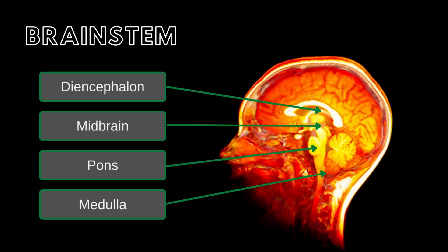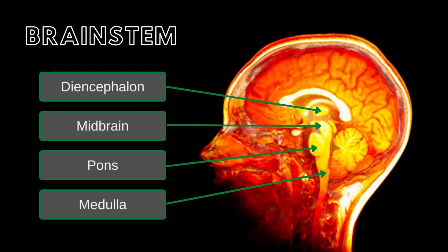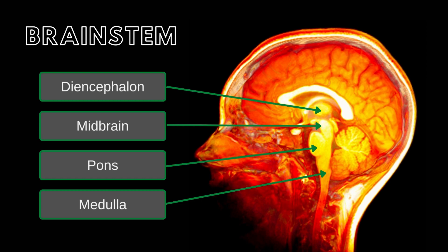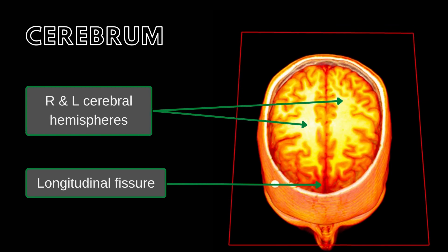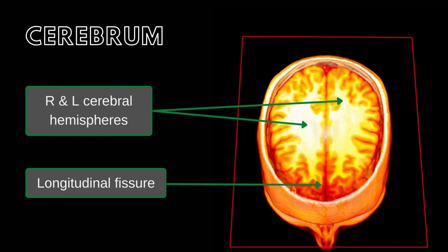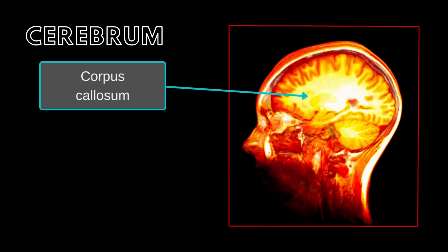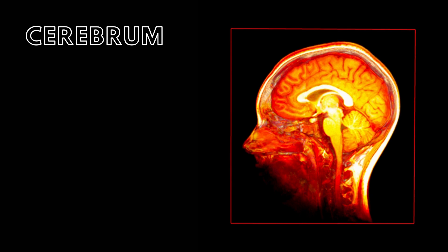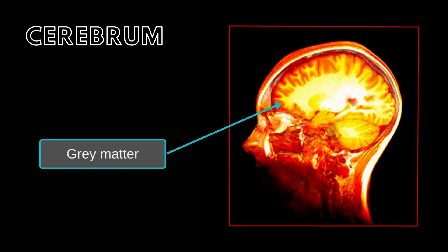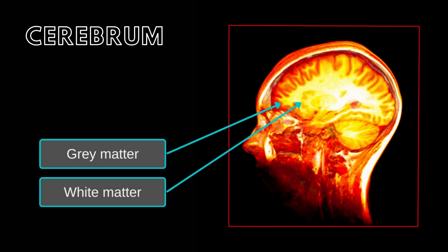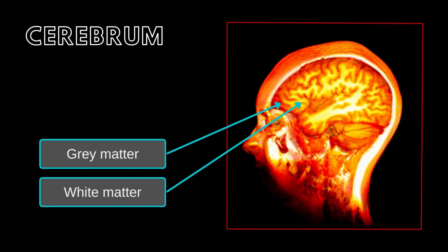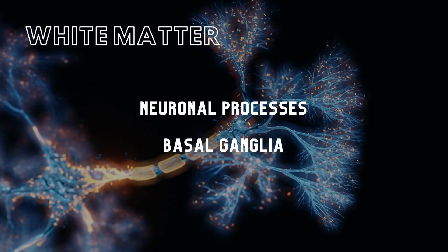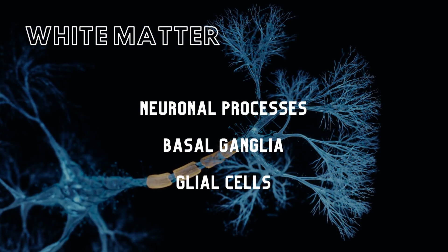The brainstem is divided into the diencephalon, the midbrain, the pons, and finally the medulla. The cerebrum, divided by the longitudinal fissure and connected by the corpus callosum, forms the brain's left and right cerebral hemispheres. Each hemisphere consists of a cerebral cortex of neuronal gray matter and a layer of white matter, which is composed of neuronal processes, basal ganglia, and glial cells.